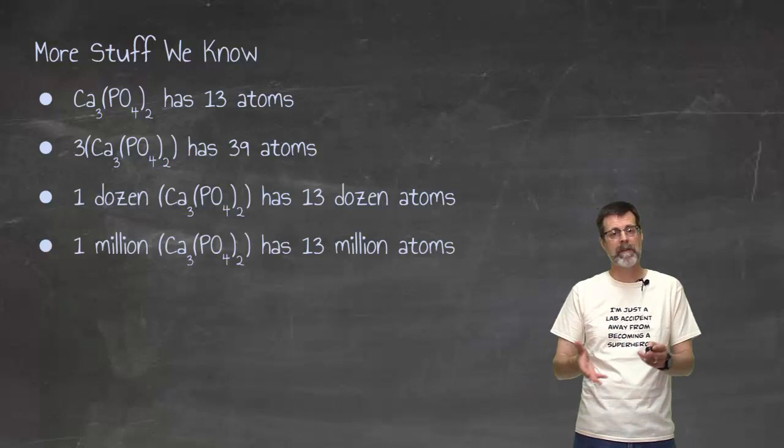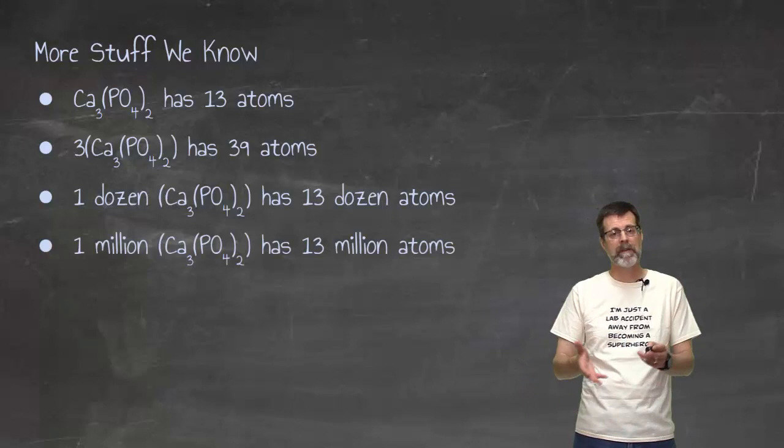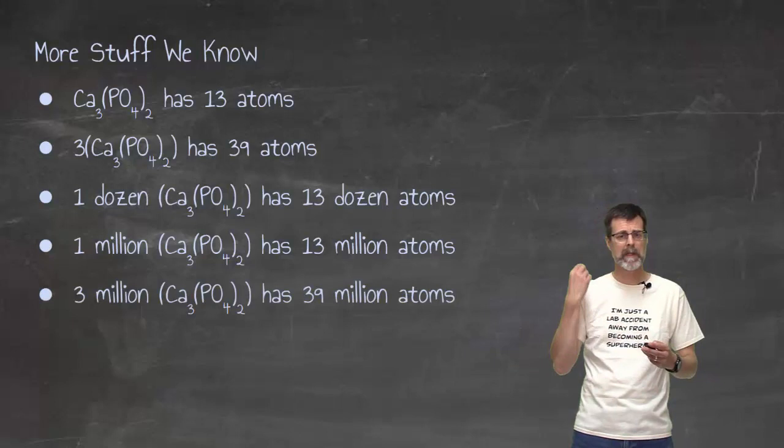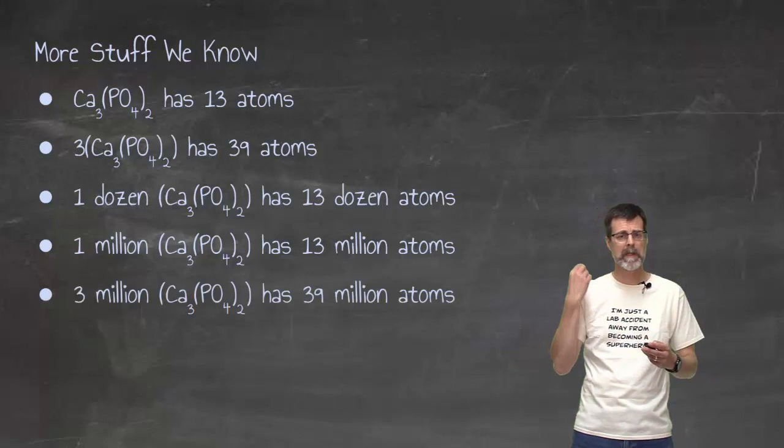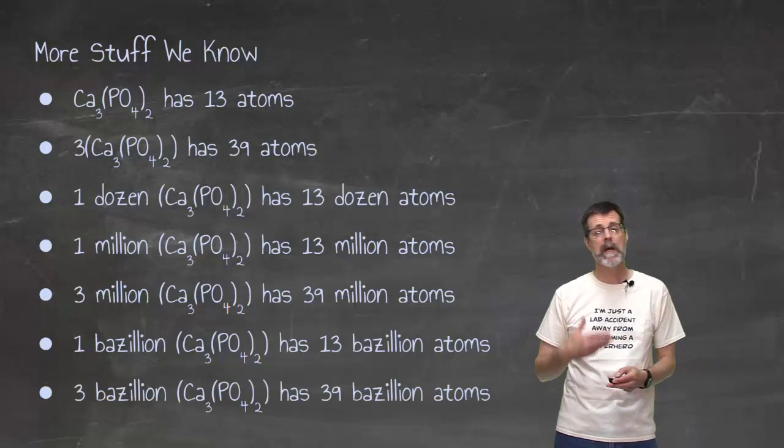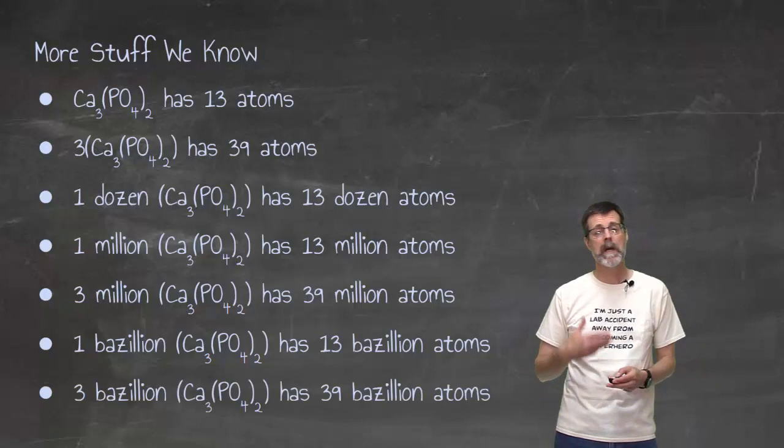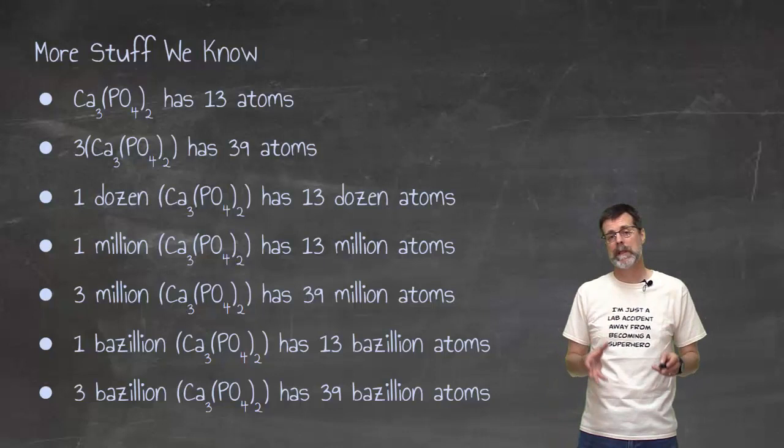And if I had a million of them, then if each one of them has 13, then a million of them have 13 million. And I could write out all the zeros, but I'm going to leave it as the name. Three million, like before, would be 39 million because there's three times 13. And if I had a bazillion of them, exactly the same pattern exists. I've been picking one bazillion and three bazillion or one dozen and three dozen, but the point is it's exactly the same thing.